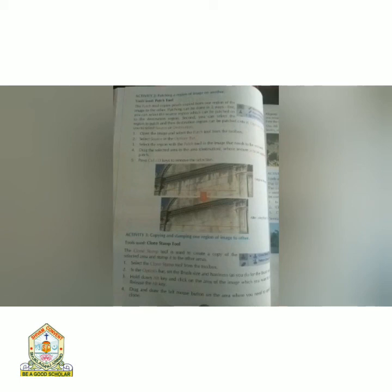With the Clone Stamp tool, you can take a sample from a part of an image and stamp it to the same image or another image. First, select the Clone Stamp tool from the toolbox. Next, set up the brush size and hardness. Hold Alt and click on the area you want to copy, then drag and draw with the left mouse button on the area where you need to apply the clone.